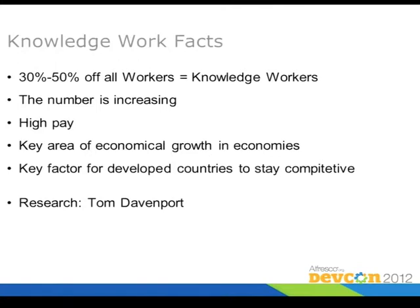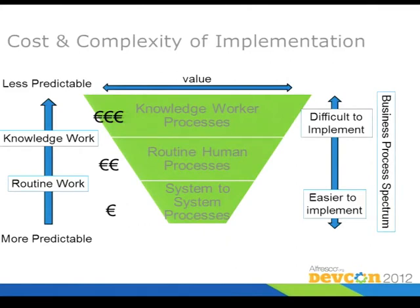The guy who figured this out is Tom Davenport. Now, coming to the cost and complexity of implementation for certain things — here you see system-to-system processes. For example, extracting data from a core system and shipping it into a data warehouse is pretty straightforward — we know the requirements, we can implement and automate it. System integration is always about automation; you don't want to do manual things. If you use Alfresco and want to put content into the cloud, you just configure what files are shipped and after that everything goes automatically.